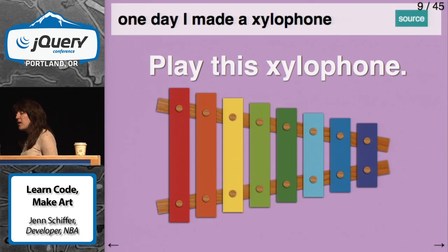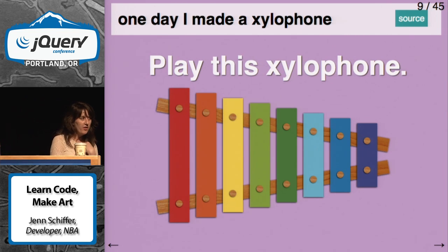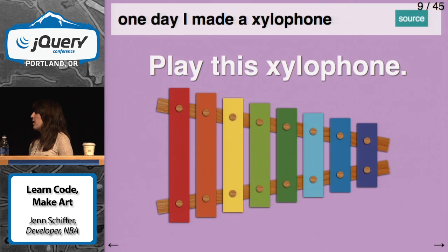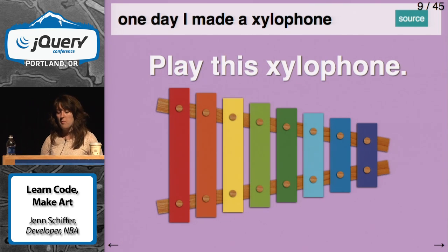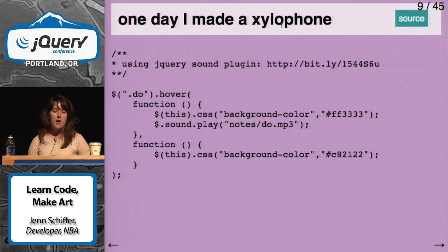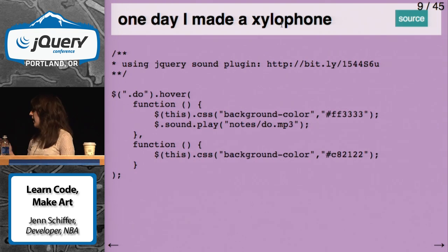I'm going to go over a couple of examples of things I've made using code and art. I call everything I make stupid and I hate it, but really deep down I love these little things. Getting out of Java and PHP, I wanted to dive into CSS. CSS3 allows you to do a lot of cool stuff with shapes, so I decided I want to make a xylophone with CSS. The wooden bars have a background image, and I wanted it to play sounds when you click on it, kind of like a real xylophone. I made that — it was really simple with jQuery using a sound plugin.